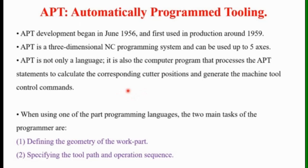When using one of the Part Programming Languages, the two main tasks of the Programmer are: first, defining the geometry of the work part; and second, specifying the tool path and operation sequence. These are the two main things to consider while writing this programme.